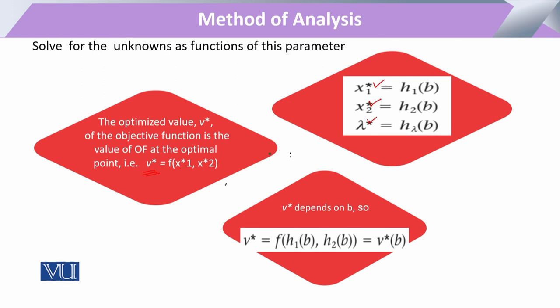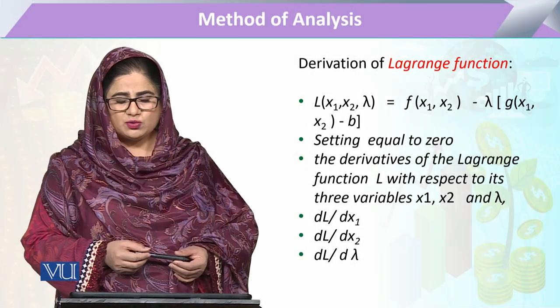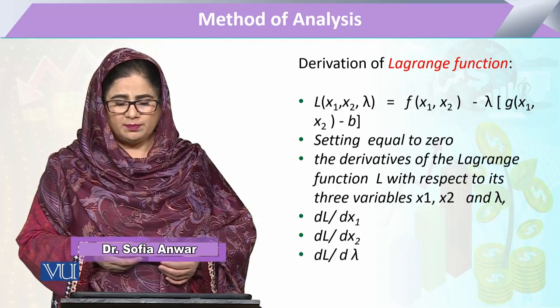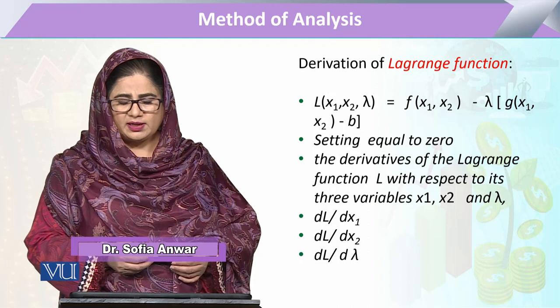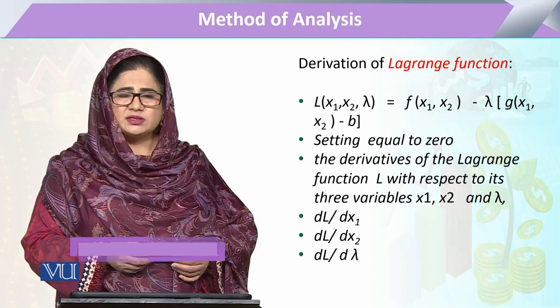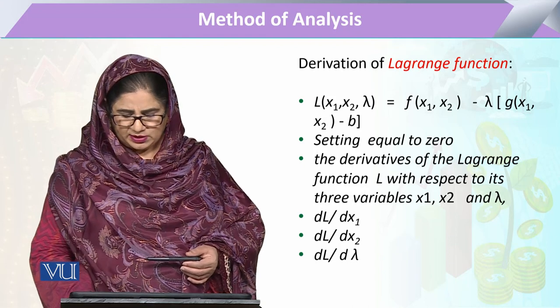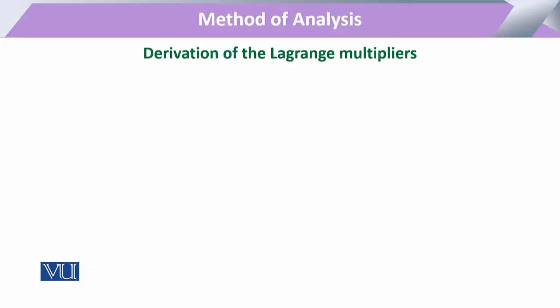Lagrange function को अगर हम एक example में लें तो simple form में हल कर सकते हैं — when Lagrange is set equal to zero और उसके बाद हम उसके derivatives को calculate करते हैं with respect to first explanatory variable, then second, and then with respect to lambda. Microeconomics में examples या consumption की होंगी या production की, तो यहां एक production example लेते हैं।